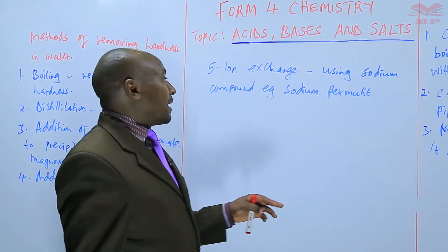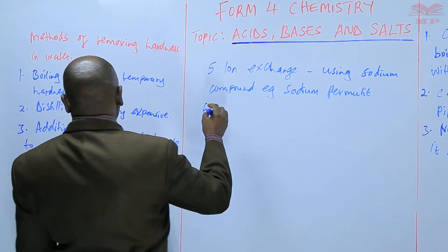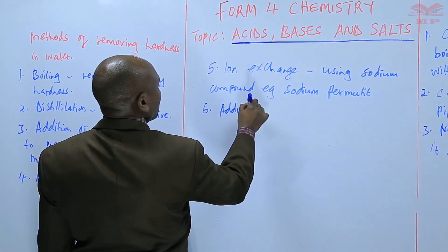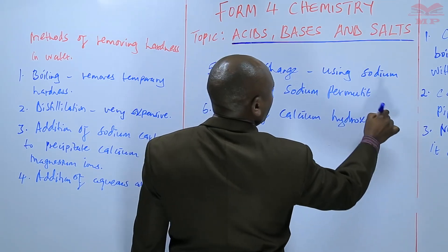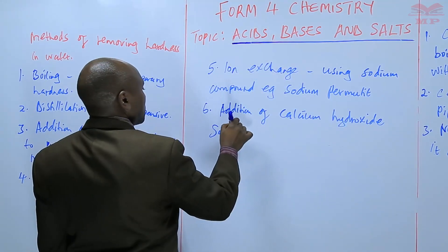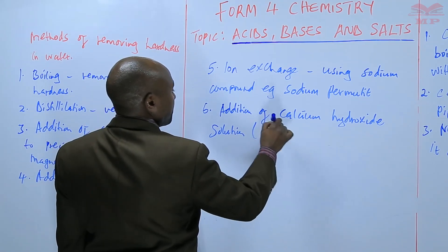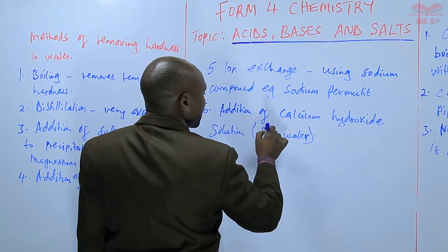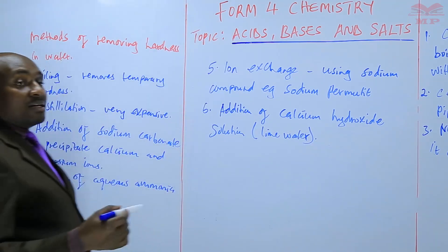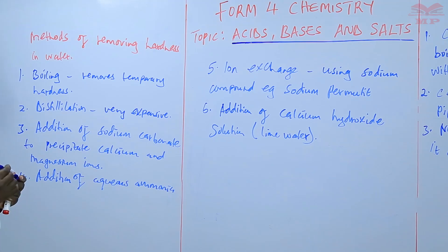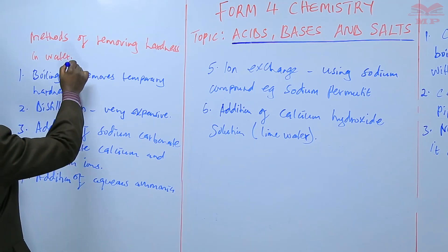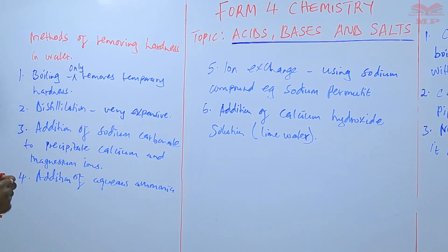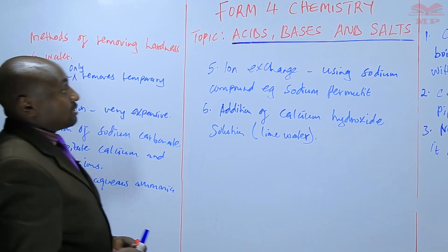So there is an exchange that happens there. There is also addition of calcium hydroxide solution, known as lime water. All these methods are geared towards precipitating or removing the magnesium and calcium ions, but boiling only removes temporary hardness. Distillation is very effective but very expensive, while the other methods can be basically done.